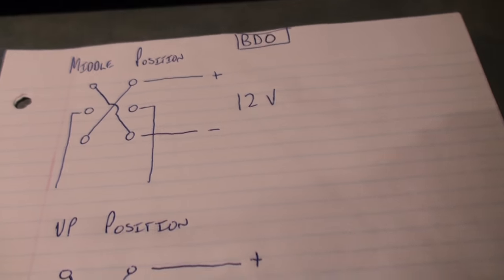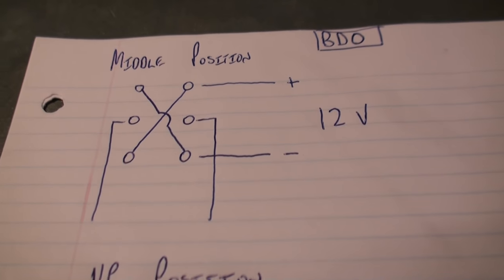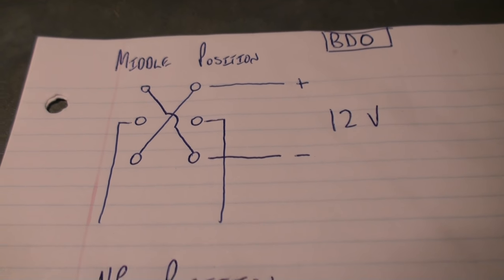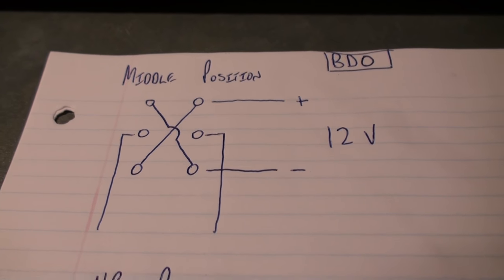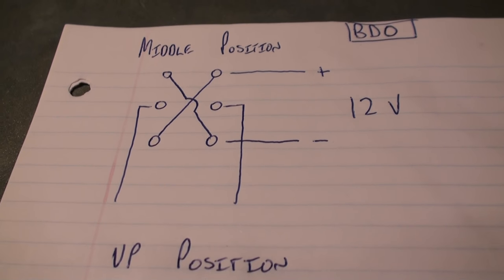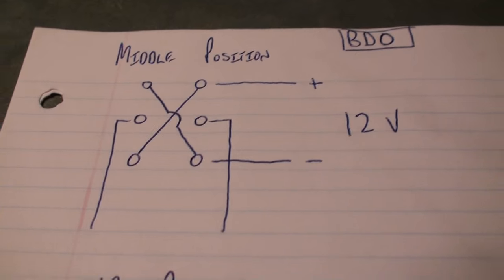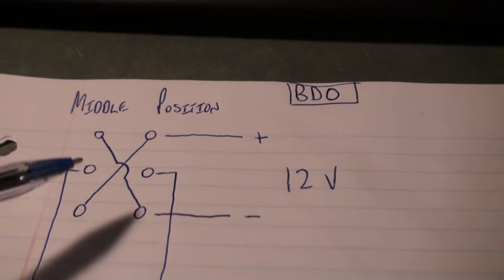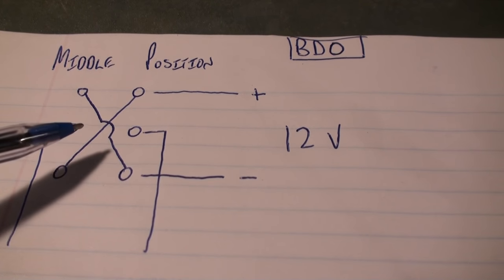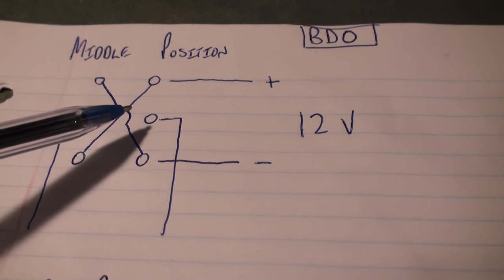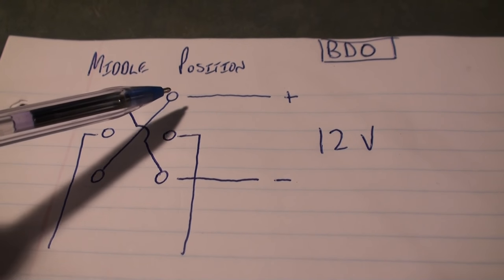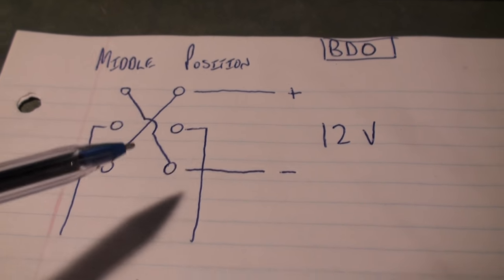With these dual pole, dual throw momentary switches, they can be hooked up in this clever way where you can actually reverse polarities. In the middle position, which I've got here, we can see that when the switch is in the middle position nothing is connected.